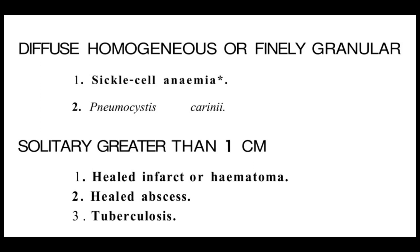If within the splenic parenchyma the calcification appears in a fine granular pattern or a diffuse homogenous pattern, it would be due to sickle cell anemia or Pneumocystis infection. Pneumocystis typically involves patients suffering from AIDS or having immunodeficiencies. In both sickle cell anemia and Pneumocystis infection, the calcification appears in a finely granular pattern or sometimes a diffusely homogenous pattern.